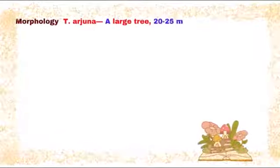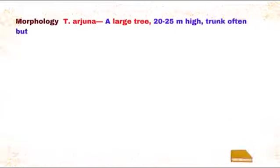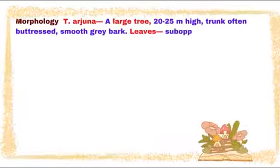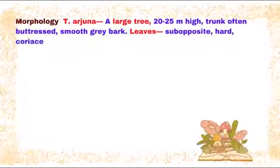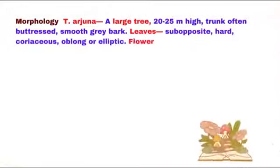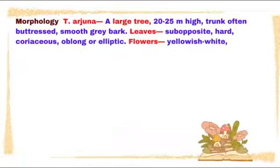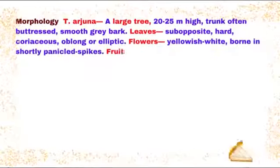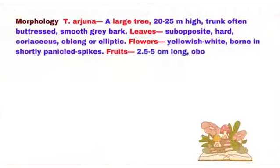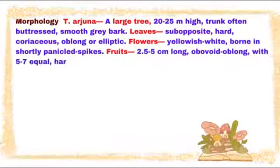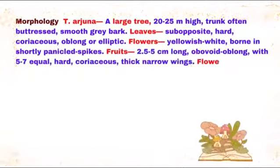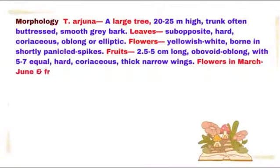Morphology of Terminalia Arjuna: It is a large tree, 20–25 meters high. Trunk is often buttressed with smooth grey bark. Leaves are sub-opposite, hard, coriaceous, oblong-elliptic. Flowers are yellowish-white, borne on short panicled spikes. Fruits are 2.5–5 cm long, obovoid or oblong, with 5–7 equal, hard, coriaceous, thick narrow wings.